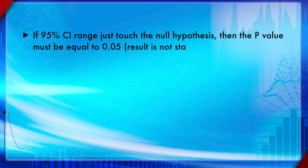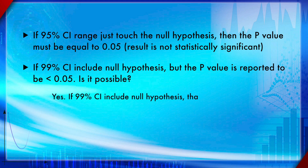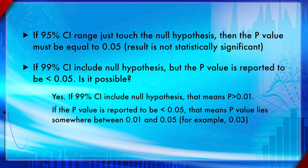If the 95% CI just touches the null hypothesis — for example, directly at 37 degrees — the p-value equals 0.05 and the conclusion is non-significant. If the 99% CI includes the null hypothesis but the p-value is reported as less than 0.05, is that possible? Yes — because if the 99% CI includes the null hypothesis, the p-value must be greater than 0.01, but it could still be less than 0.05. So the real p-value could be somewhere between 0.01 and 0.05, for example 0.03 or 0.04, making the conclusion valid.